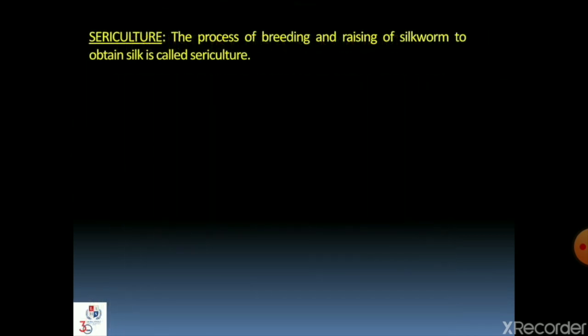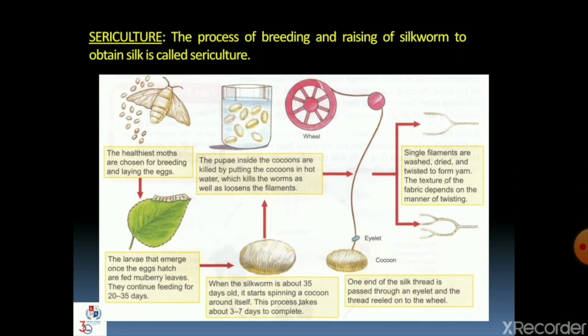Let's learn about sericulture. The process of breeding and raising of silkworm to obtain silk is called sericulture, which means silk farming. It is a very old occupation in India. The healthiest moths are chosen for breeding and laying eggs. The larvae that emerge once the eggs hatch are fed mulberry leaves and continue feeding for about 20 to 35 days. When the silkworm is about 35 days old, it starts spinning a cocoon around itself, a process that takes about 3 to 7 days. The pupa inside the cocoons are killed by putting them in hot water, which kills the worms and loosens the filament. One end of the silk thread is passed through an eyelet and the thread is reeled onto a wheel, extracting the fiber from the cocoon. Single filaments are washed, dried, and twisted to form yarn. The texture of the fabric depends on the manner of twisting.